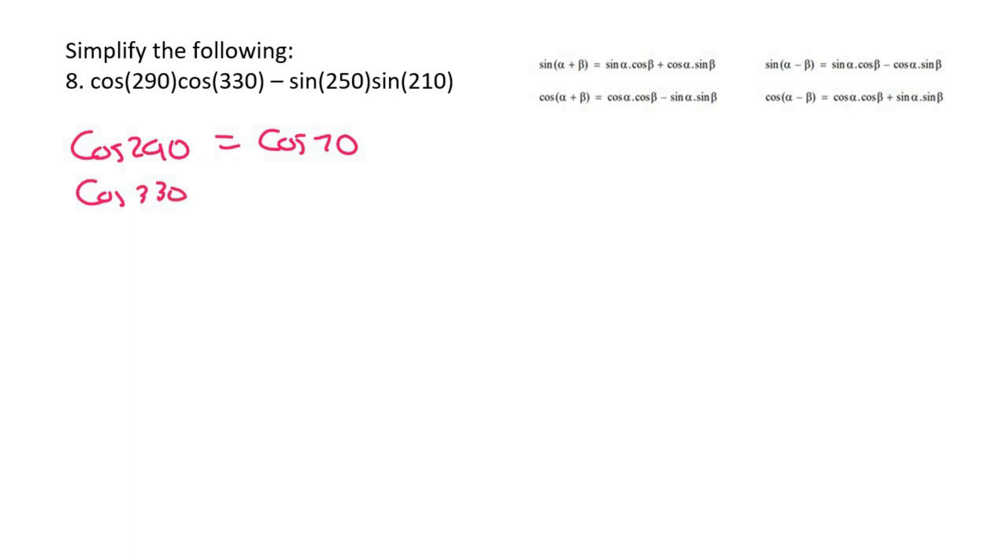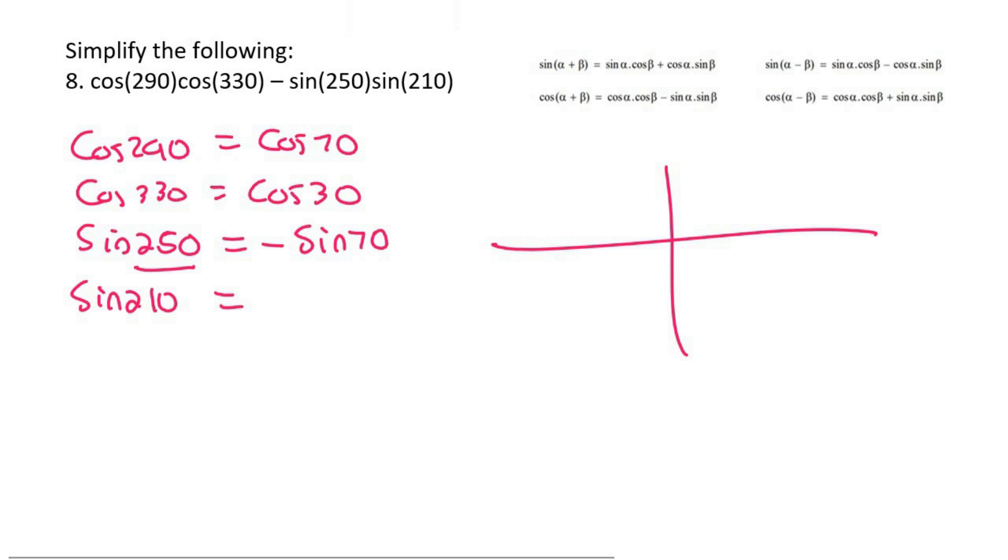And then cos 330, that would eventually equal to cos of 30. Sin of 250, this one's interesting. The reason is that 250 is in this quadrant here but sin is negative there. So you must remember that this will be negative sin 70. And the sin of 210, well 210 is also in this quadrant so it will be negative sin 30. That's important.